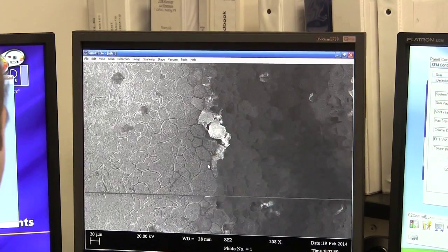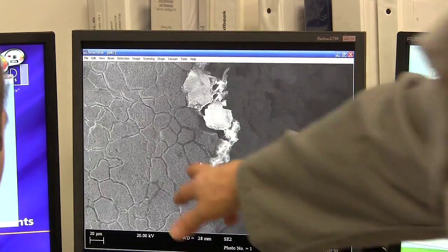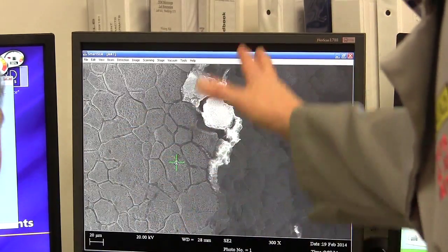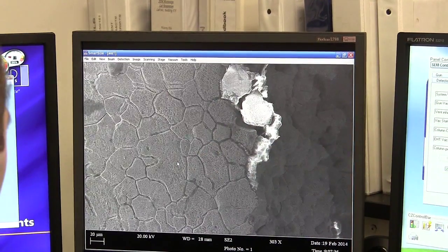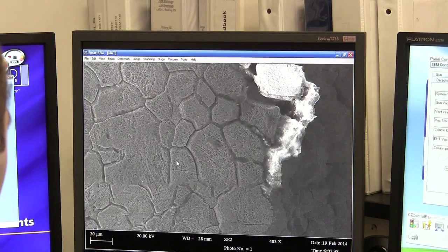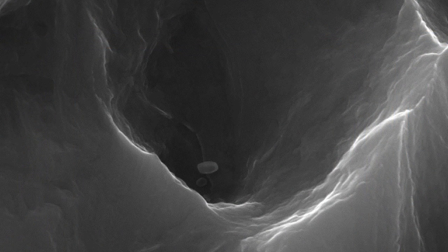So we now know what the sample looks like in almost three dimensions. As the microscope scans the surface back and forth, the data is used to create the image you see here.